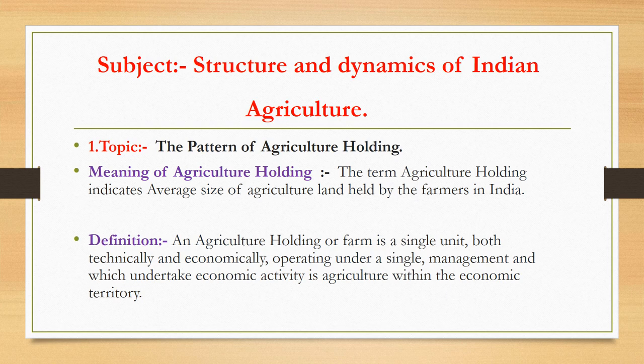The definition of agriculture holding: an agriculture holding or farm is a single unit, both technically and economically, operating under a single management which undertakes economic activity in agriculture within the economic territory. There are three criteria of agriculture holding: first, it produces agriculture products; second, its day-to-day management is independent; third, it has a term of surface area, production, and number of animals.